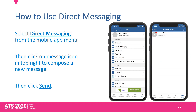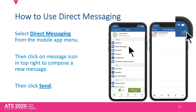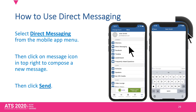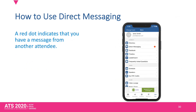To message someone, select Direct Messaging, compose a new message, and send. A red dot indicates that you have a message from another attendee.